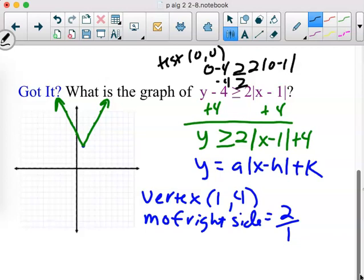How about 0 minus 1? Negative 1. What's the absolute value of negative 1? 1. What's 1 times 2? 2. Is negative 4 greater than or equal to 2? Well that means 0,0 doesn't work this time. And that was outside the v. So I have to do my shading inside the v. Like so. So far so good? A lot of review, right? Yeah, a lot of things we've already done.